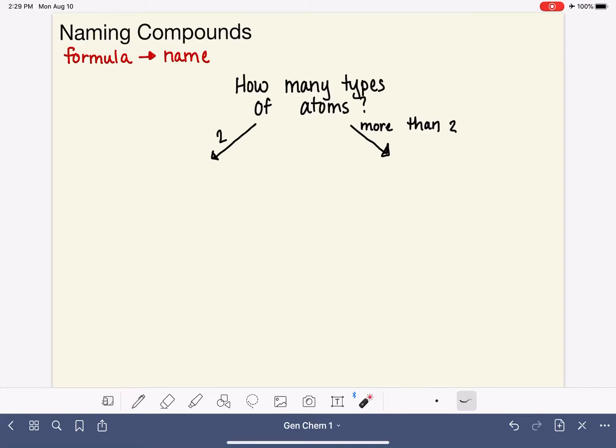If you only have two types of atoms, the next thing you should ask yourself is: is one of them a metal? On the periodic table, the metals are on the left-hand side of this jagged line. Everything to the left is a metal, and everything to the right is a non-metal. So we want to know, based on the periodic table, if one of them is a metal. That's going to be a yes or no question.